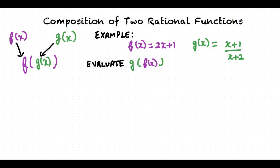Let us say we are required to evaluate g of f of x. As we can see, g of f is a composition of two rational functions g and f. Let us compare g of f and g of x. We can see that f in g is equivalent to x in the g function.